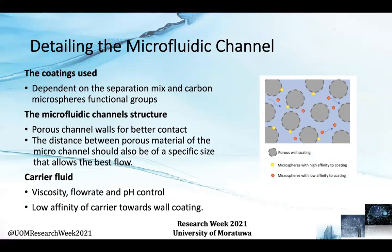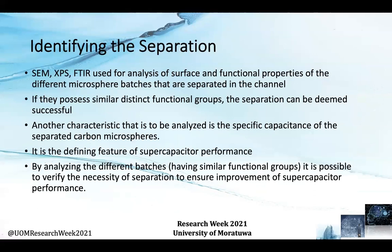Finally, the carrier fluid, which carries the microspheres through the channel, should have a viscosity, flow rate, and pH that optimizes flow and separation of carbon microspheres, and it should also have a low affinity to the wall itself, as the process is entirely dependent on the microspheres being attached to the wall and not the carrier. Analysis of the surface and functional properties of the different microsphere batches can be done by scanning electron microscopy, Fourier transform infrared spectroscopy, and X-ray photoelectron spectroscopy. If when scanned they possess similar distinct functional groups, the separation can be deemed successful.